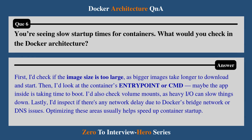Question 6: You are seeing slow startup times for a container. What would you check in the Docker architecture? First, I would check if the image size is too large, as bigger images can take longer to download and start. Then I would look at the container's entry point or CMD — maybe the app inside is taking time to boot. I would also check volume mounts, as heavy I/O can slow things down. Lastly, I would inspect if there's any network delay due to Docker's bridge network or DNS issues.